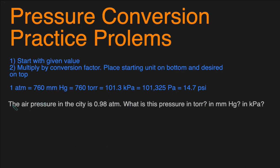The first question reads: the air pressure in the city is 0.98 ATM. ATM is just a pressure unit called atmosphere. What is the pressure in Torr? Here we're being asked to convert from ATM to Torr. So let's take a look at the steps. We first start with the given value, which is 0.98 ATM — 0.98 atmospheres.